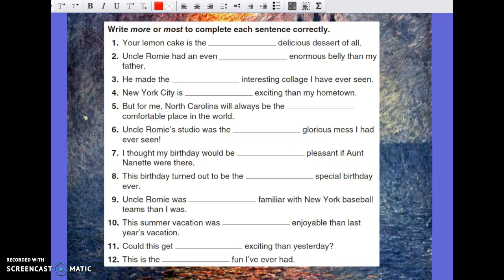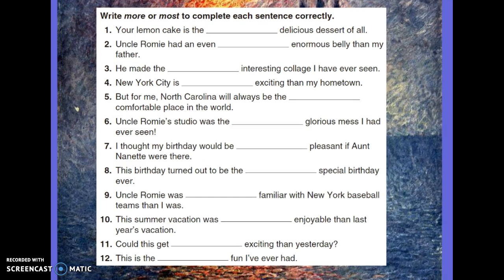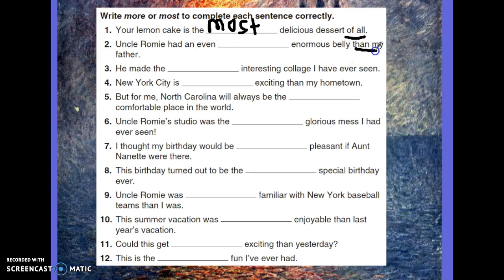In your practice today, on page 147, you're going to write more or most to complete each sentence correctly. Let's do number one and two together. Number one: your lemon cake is the blank delicious dessert of all. That phrase of all is our key phrase, so we need to put most here because we're comparing more than two things. In number two: Uncle Romy had an even blank enormous belly than my father. Then my father tells me I'm comparing Uncle Romy's belly to my father's belly — two things — so I just need the word more when comparing two things.